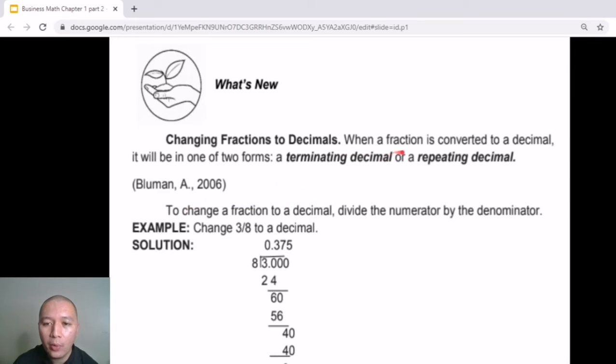According to Blumen, when a fraction is converted to a decimal, it will be one of the two forms. In order for us to change a fraction into a decimal, we have to divide the numerator by the denominator. So for example, if we want to change the fraction 3 over 8 into a decimal, we would have to divide 3 by 8. There is a long method on how you would compute this as shown in the module. However, if we would just key in 3 divided by 8 using our calculators, we would easily arrive at the answer 0.375.